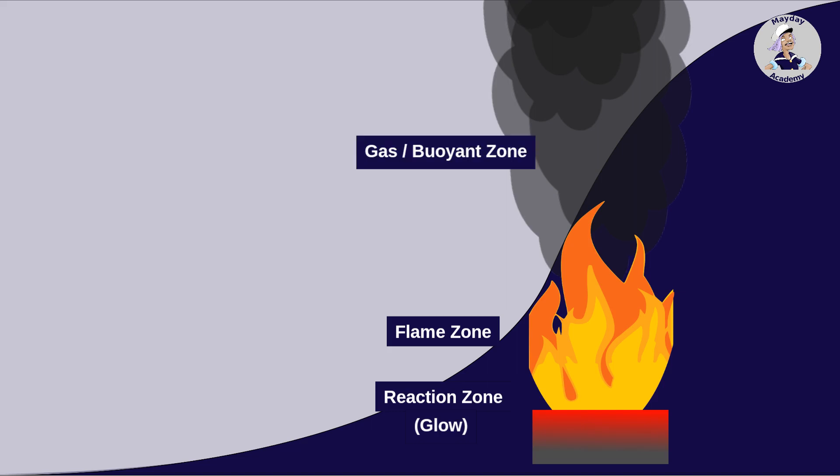In the gas or buoyant zone, no flame is visible anymore. Here, the combustion products and partially unburnt gaseous fuels rise due to their high temperature. Visually, the buoyant zone is mostly recognized as smoke.